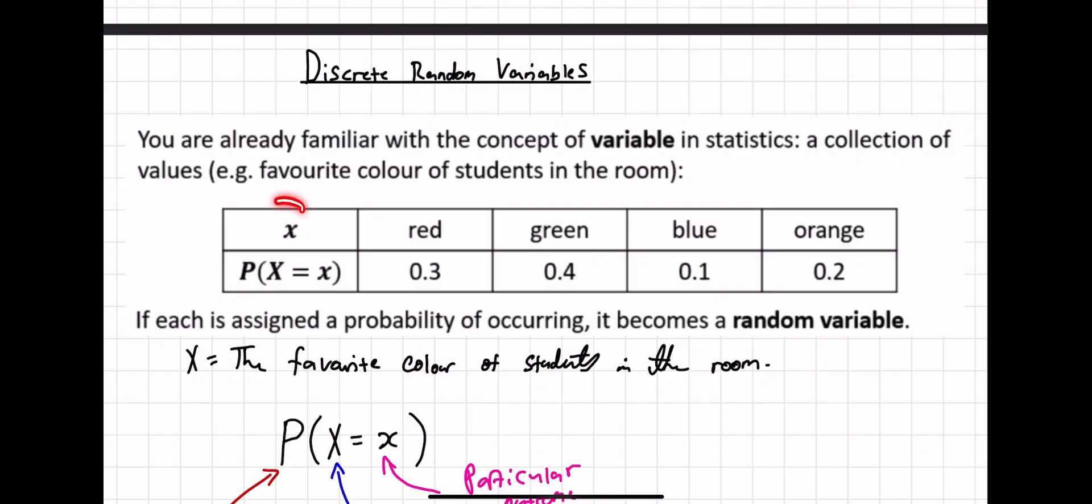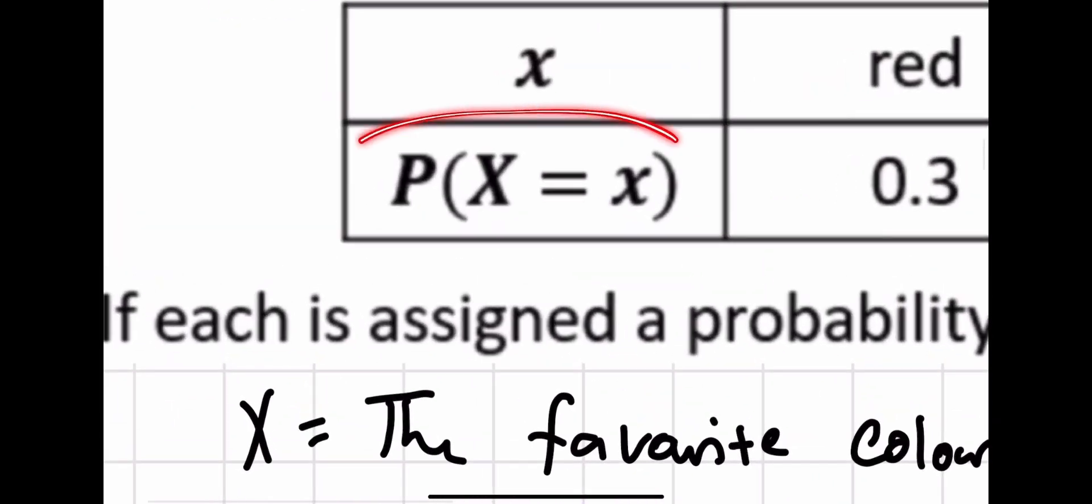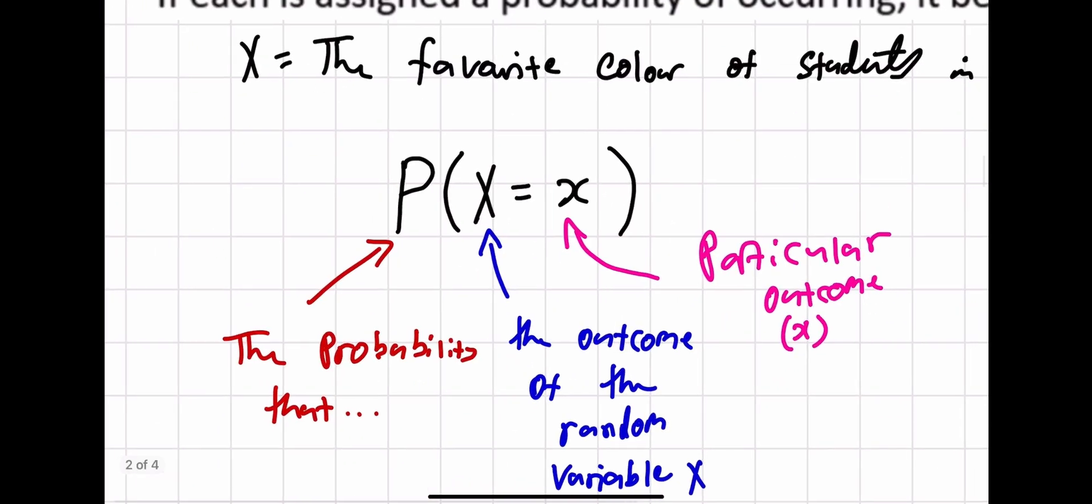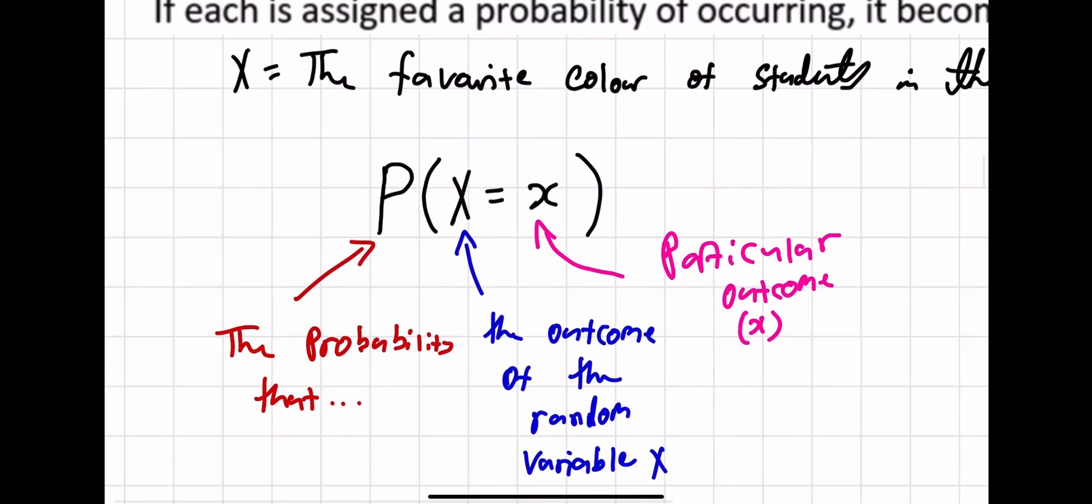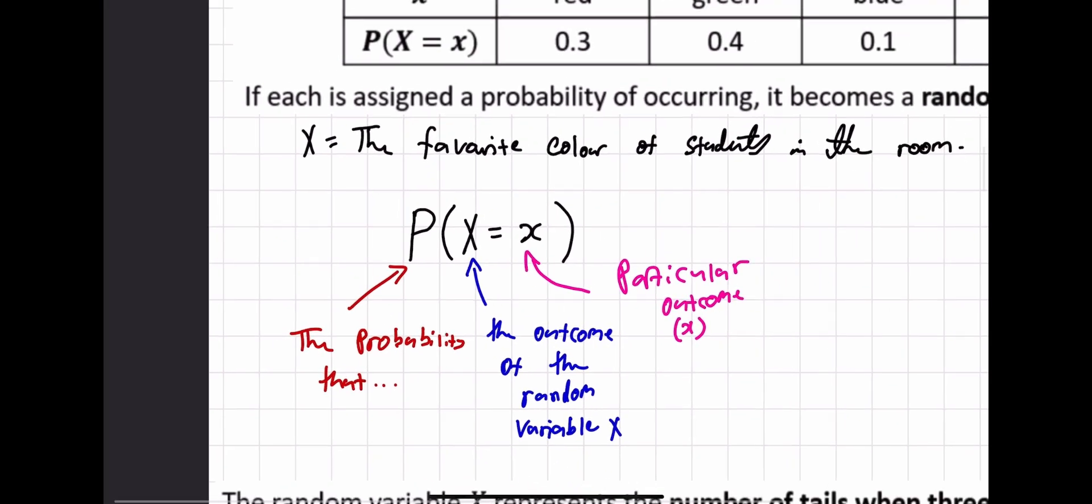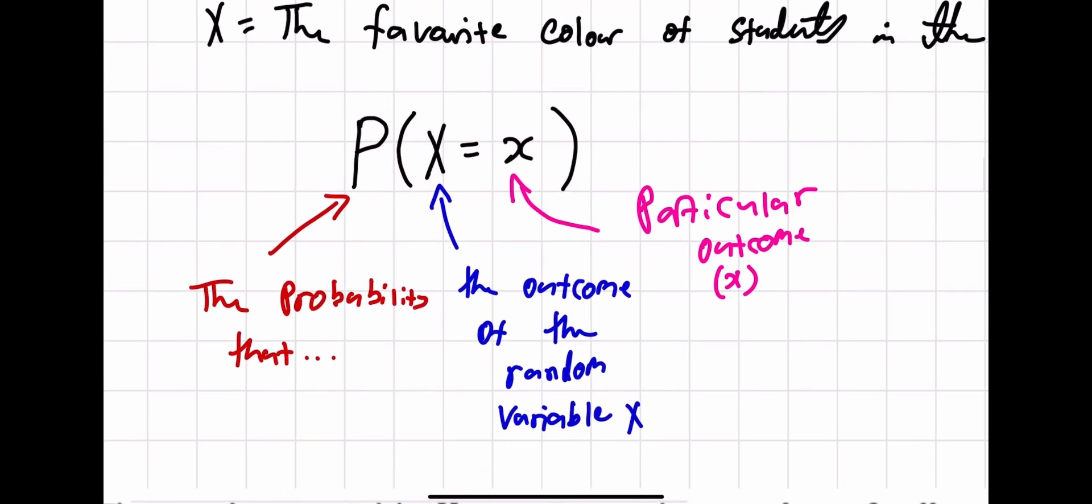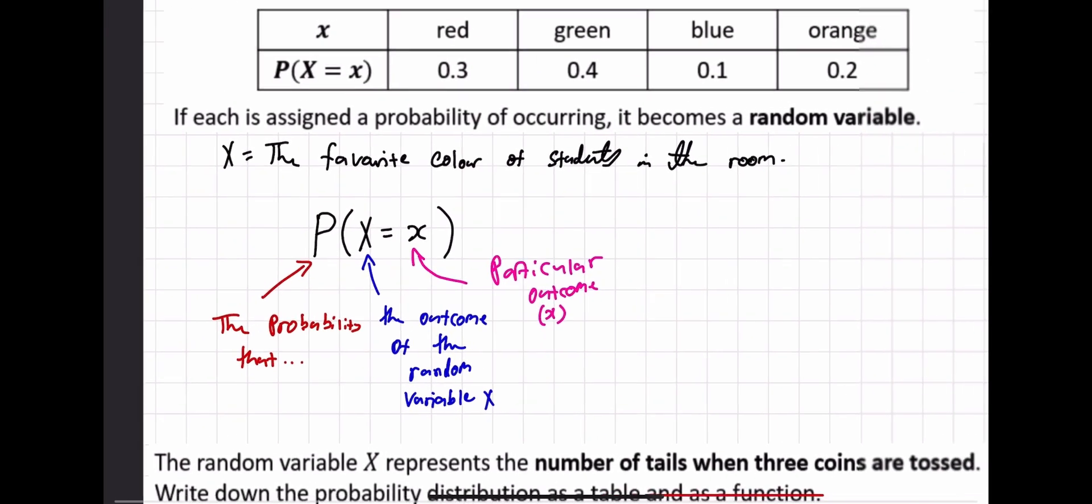So here we have X and lowercase x is just all the outcomes you can have. So a student's favorite color can be red, it can be green, it can be blue, it can be orange. And the probability of it occurring is in this notation, probability that X equals x. To break that down, the P means the probability that or the probability of. X is the random variable, so in this case, we've said X is the favorite color of students in the room. And lowercase x is the outcome.